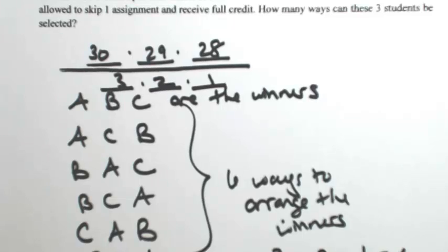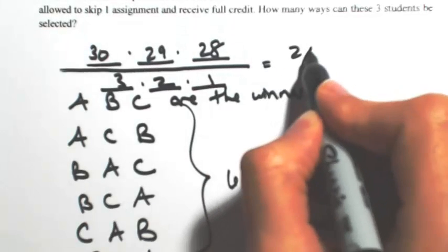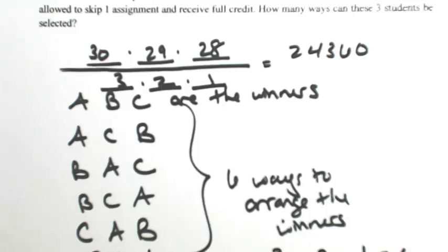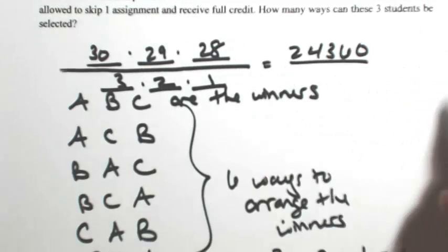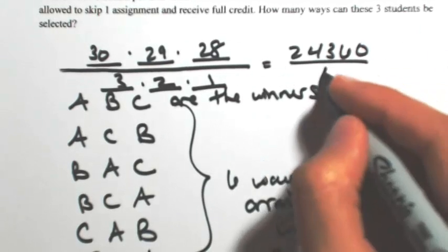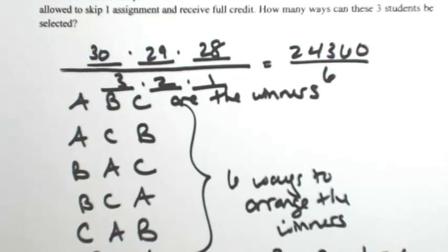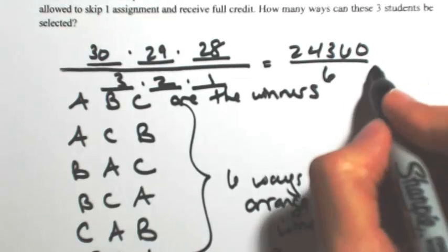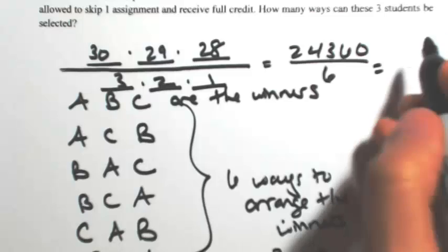We're going to divide by that six. We get the 24,360 that we got from the first problem, but then we're going to divide out the six ways to arrange these people, so we're going to lower this number significantly down to 4,060.